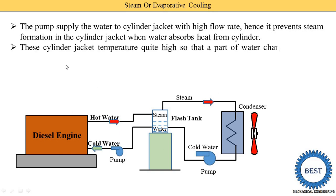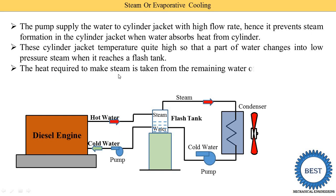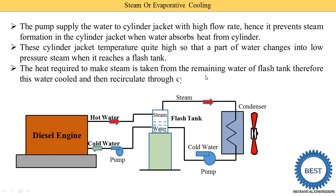The cylinder jacket temperature is quite high, so part of the water changes into low-pressure steam when it reaches the flash tank. The heat required to make steam is taken from the remaining water in the flash tank, which cools that water. This cooled water is then recirculated through the cylinder jacket.